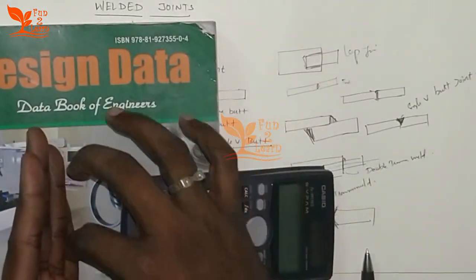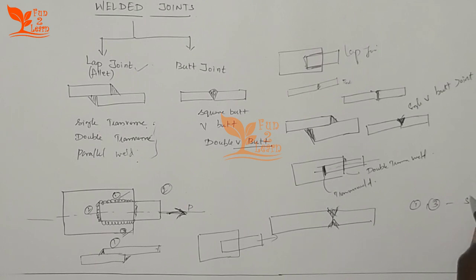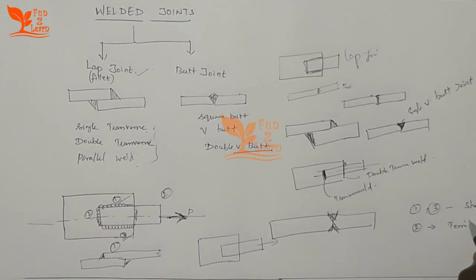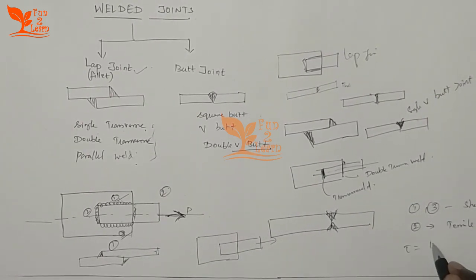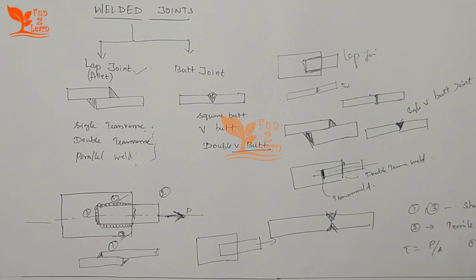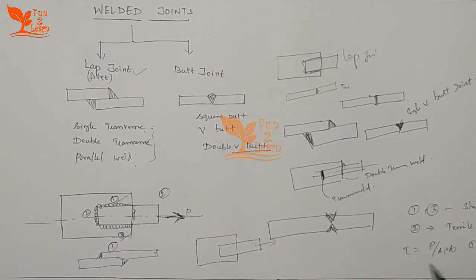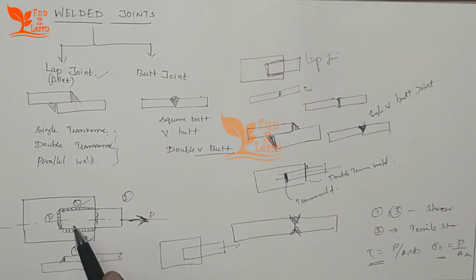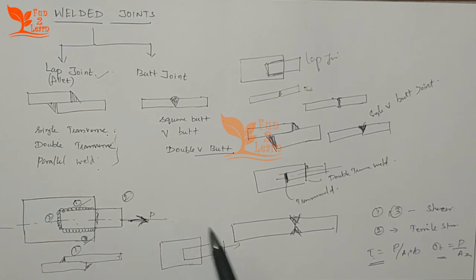The formula for shear stress is tau equals P divided by A. Tensile stress sigma equals P divided by area A1 plus A3. Weld 2 creates shear stress and welds 1 and 3 create tensile stress. In the lap joint: transverse weld load creates tensile stress, and parallel weld creates shear stress.